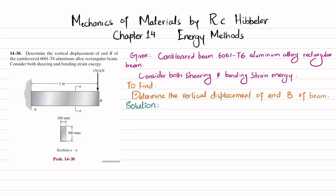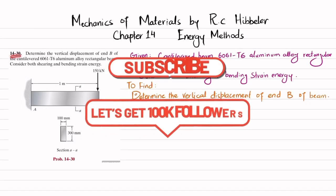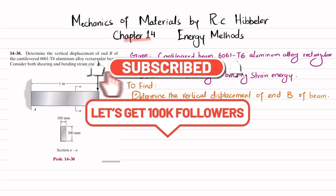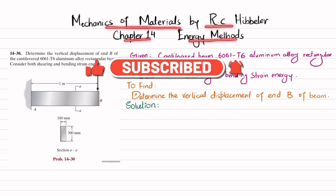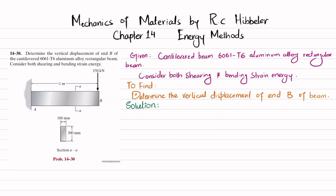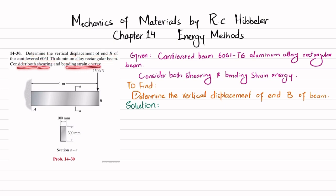Welcome back. Problem 14-30, taken from Chapter 14 Energy Methods in Mechanics of Materials by R.C. Hibbeler. The statement: determine the vertical displacement of point B of the cantilever 6061-T6 aluminum alloy rectangular beam. Consider both shearing and bending strain energy.